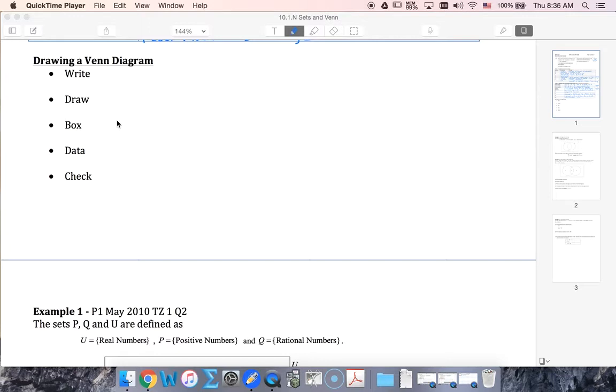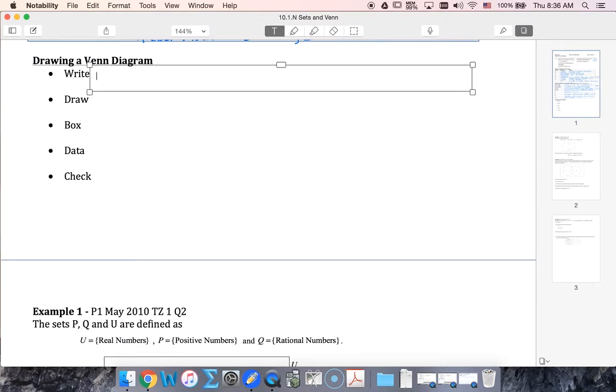So the way that I want to draw a Venn diagram is the first thing I want to do is write out all of the elements in my set. I want to write out all the elements in the universe or think about them being all written out.